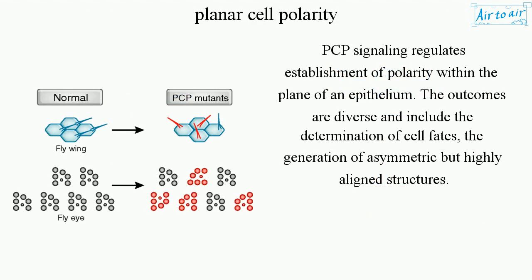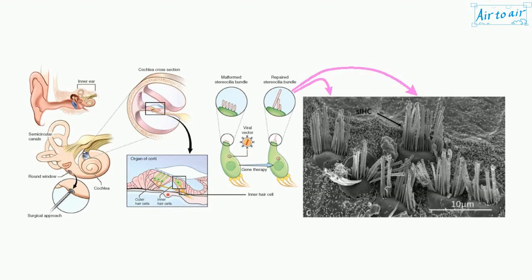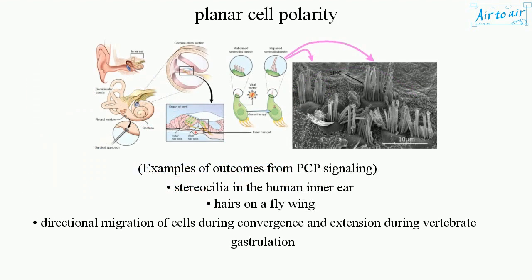PCP signaling regulates the establishment of polarity within the plane of an epithelium. The outcomes are diverse and include the determination of cell fates and the generation of asymmetric but highly aligned structures. Examples include stereocilia in the human inner ear, hairs on a fly wing, and directional migration of cells during convergence and extension in vertebrate gastrulation.